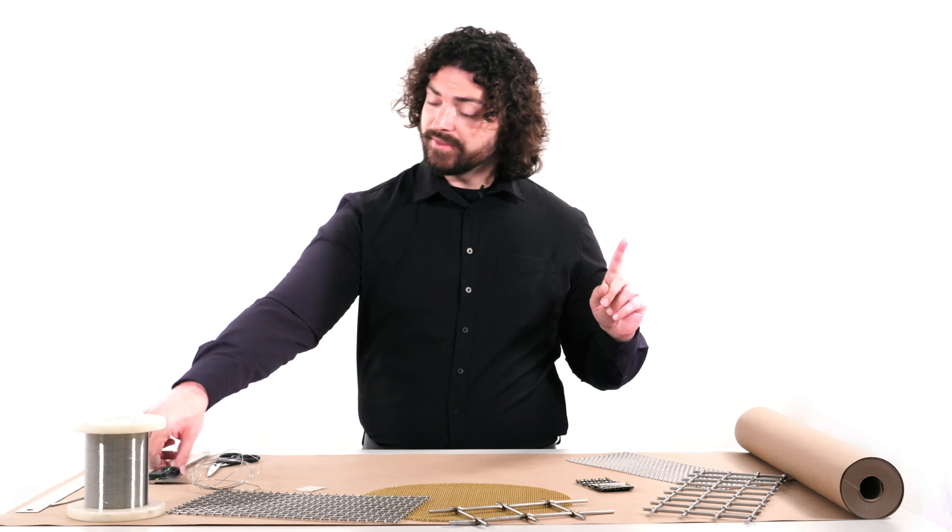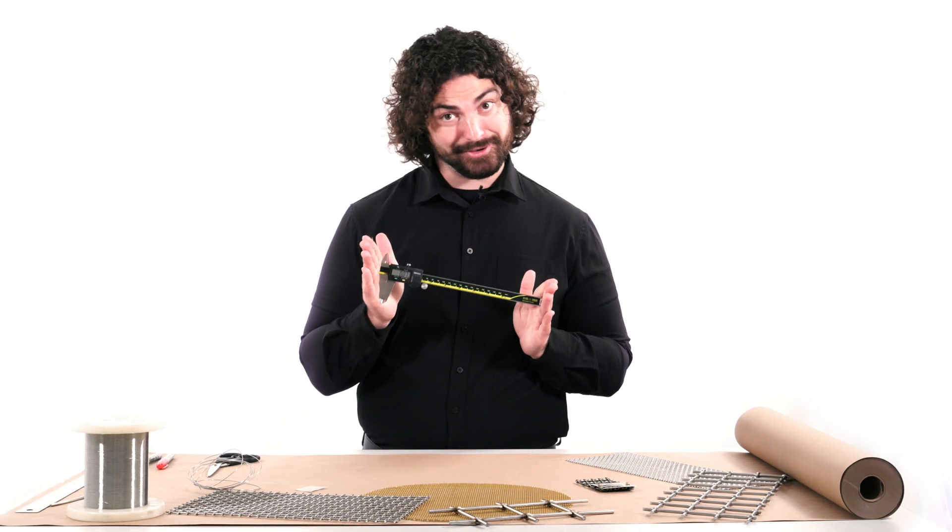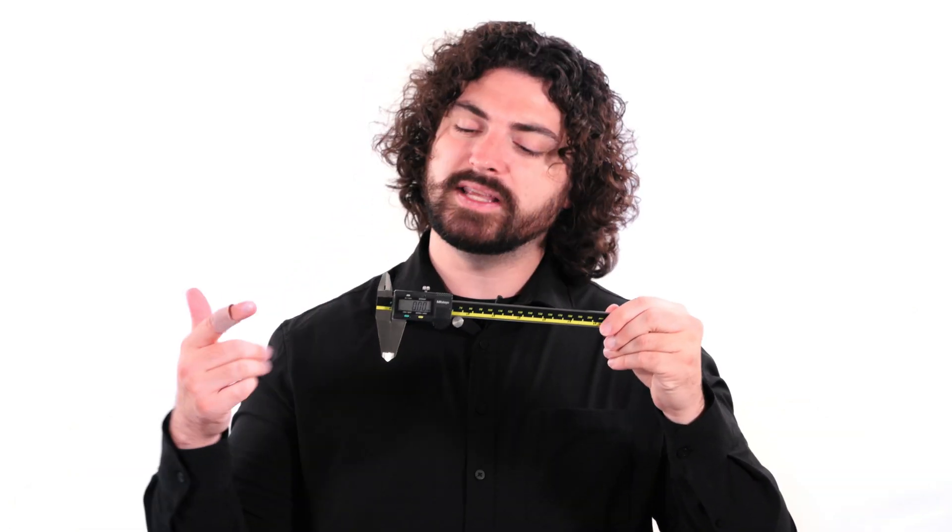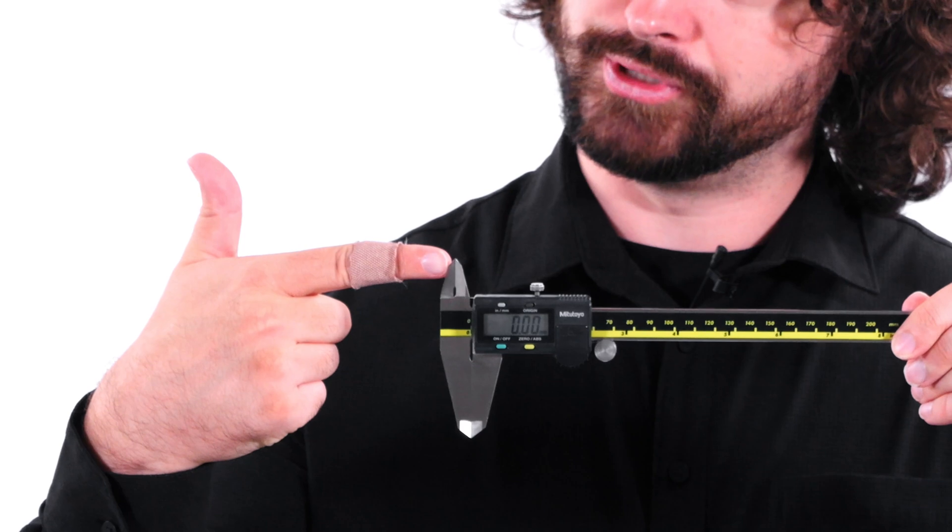But how the heck do I calculate aperture size? You can't just clamp down on the wires with some calipers. You need to measure the inside of the wires. Well, depending on the size of the mesh, you actually can use calipers. But you're not using the lower jaws, you're using the upper jaws, which is essentially the inverse of what the lower jaws do.